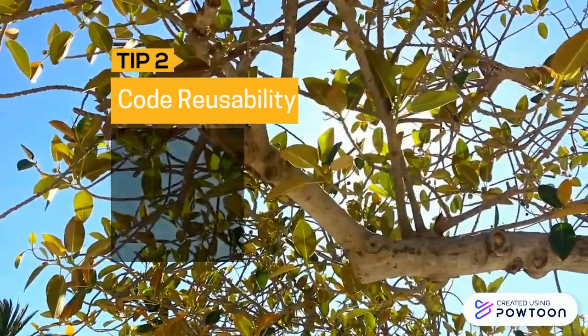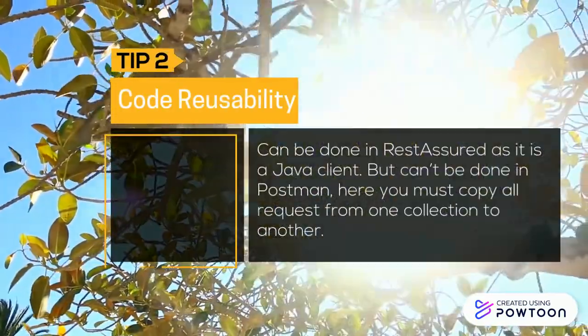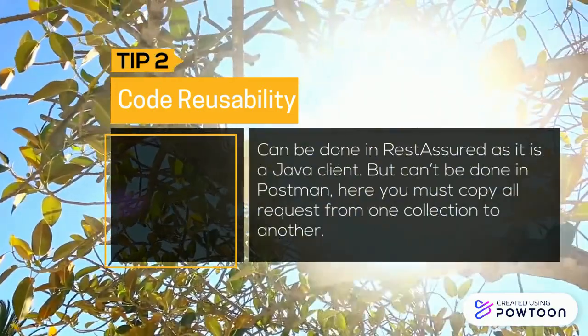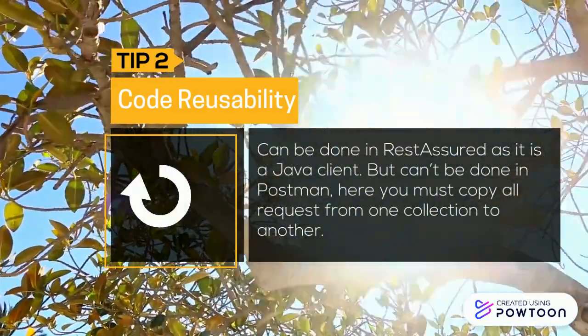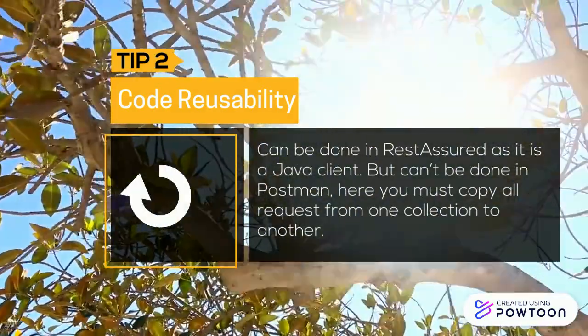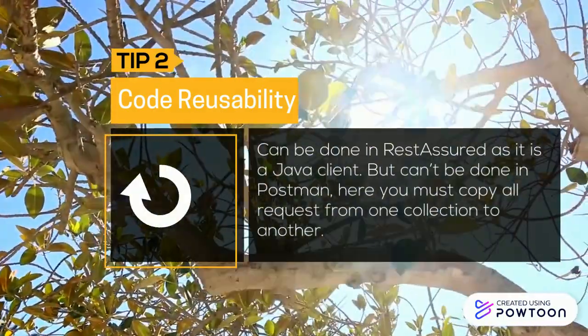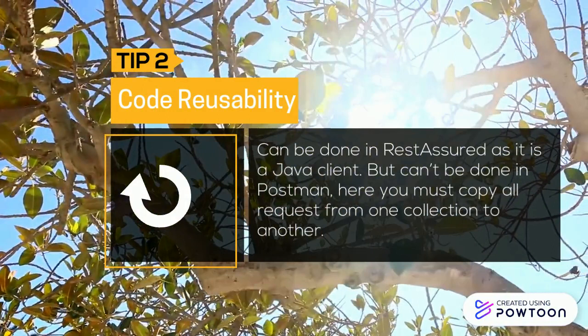Tip number two is code reusability. As you know, Rest Assured is a Java library so you can use the same methods over and over again, but in Postman you can only copy from one collection to the other.